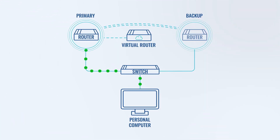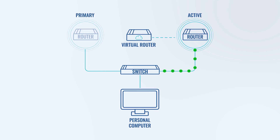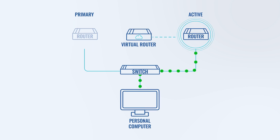Moreover, if the primary router fails and stops sending the VRRP advertisements, the backup router detects this absence, recognizes itself as having the highest priority, and takes over as the new primary router. This way it ensures uninterrupted connectivity in case the primary router fails.